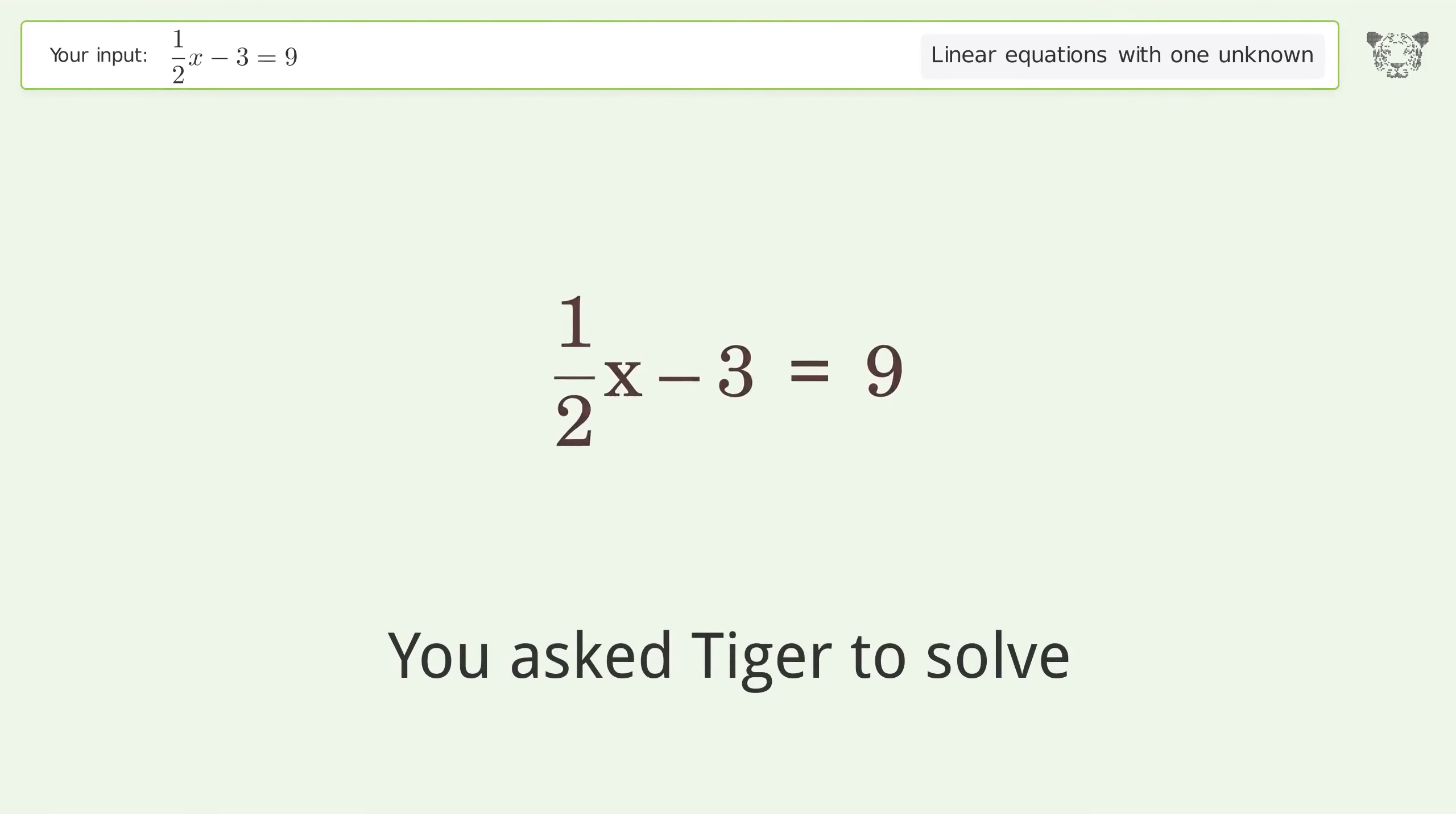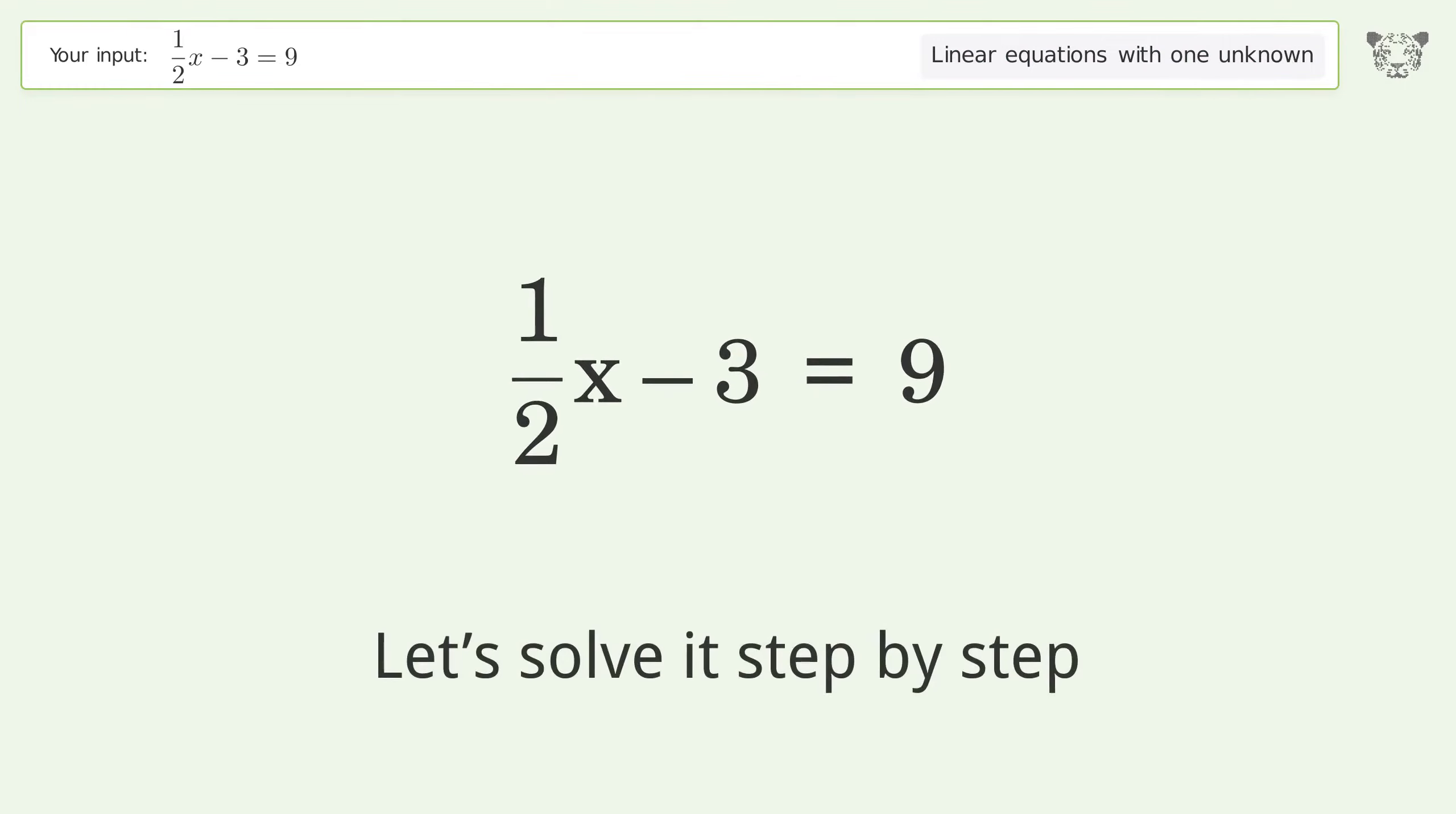You asked Tiger to solve. This deals with linear equations with one unknown. The final result is x equals 24. Let's solve it step by step.